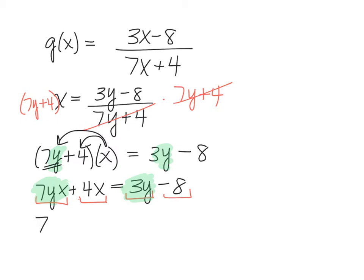So I'm going to subtract the 3y, which will be 7yx minus 3y, but then I also want to move this 4x term to the other side, because it does not contain a y. So I'm going to subtract the 4x to the other side, so that'll be negative 8 minus 4x.